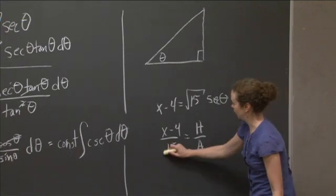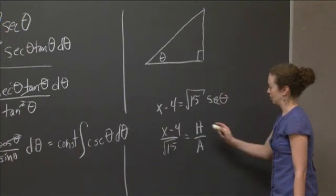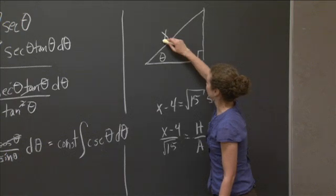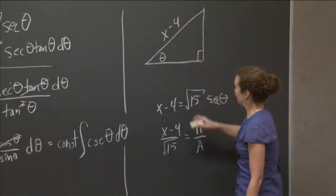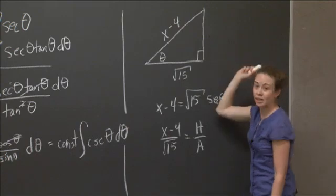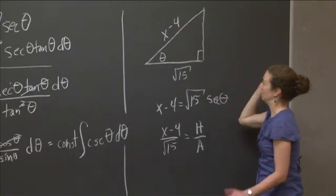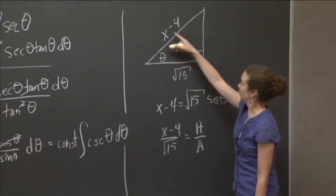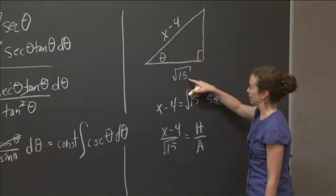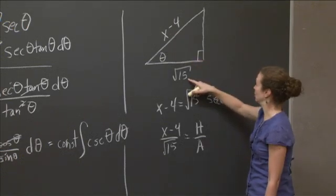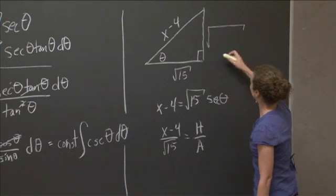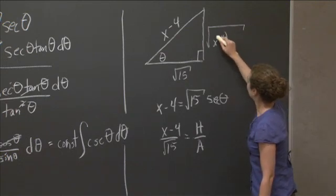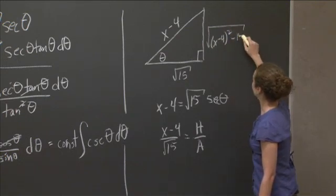And then now I can fill in the opposite by Pythagorean theorem. Right? I just take this squared, and I subtract this squared, and then I take the square root. So I get the square root of x minus 4 squared minus 15.